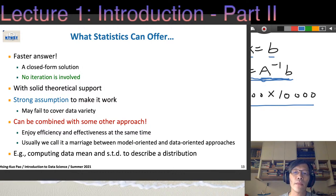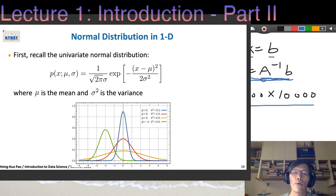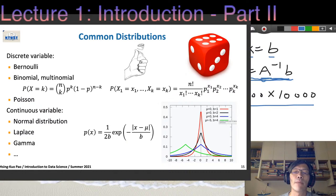What statistics can give us — we can think about something very simple: given a piece of data, we can compute mean and standard deviation to describe it. From time to time we use normal distribution to describe one-dimensional data. With different sigma — different variance — when variance is very small the distribution is very sharp, and when variance is very large the distribution is very flat.